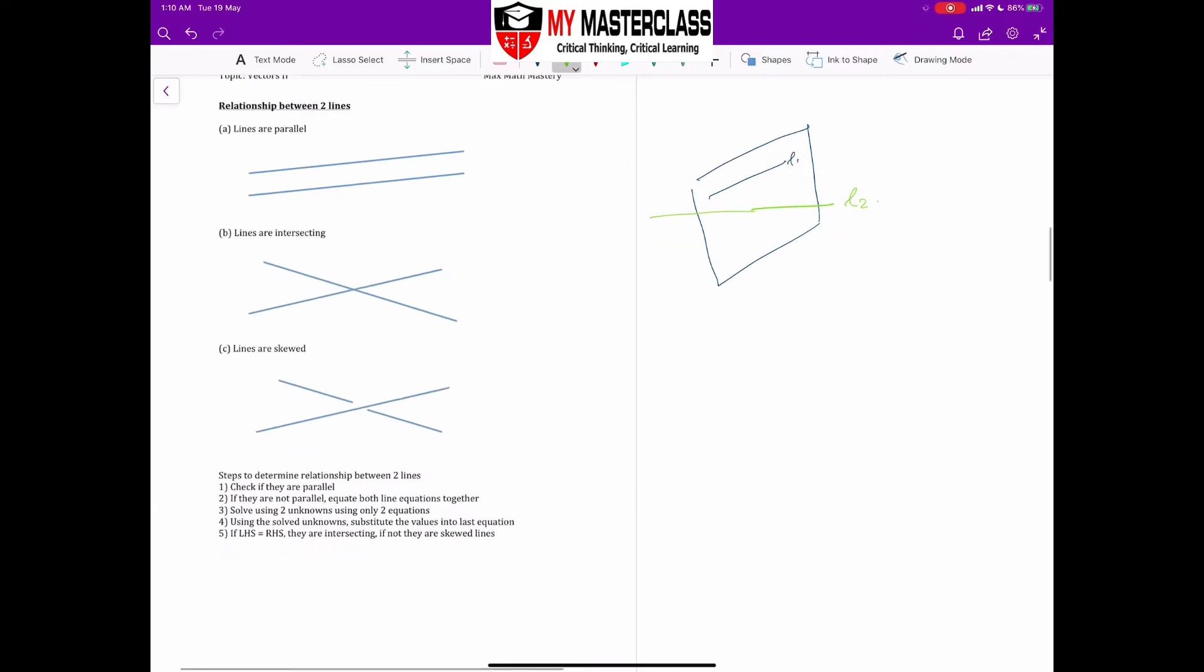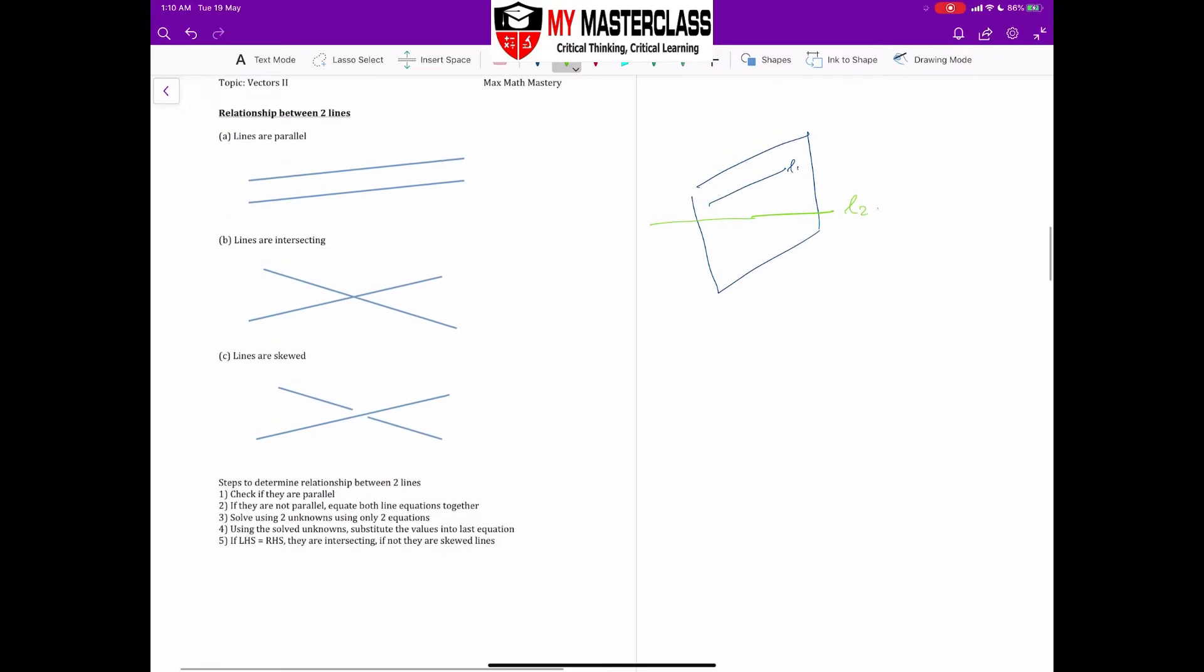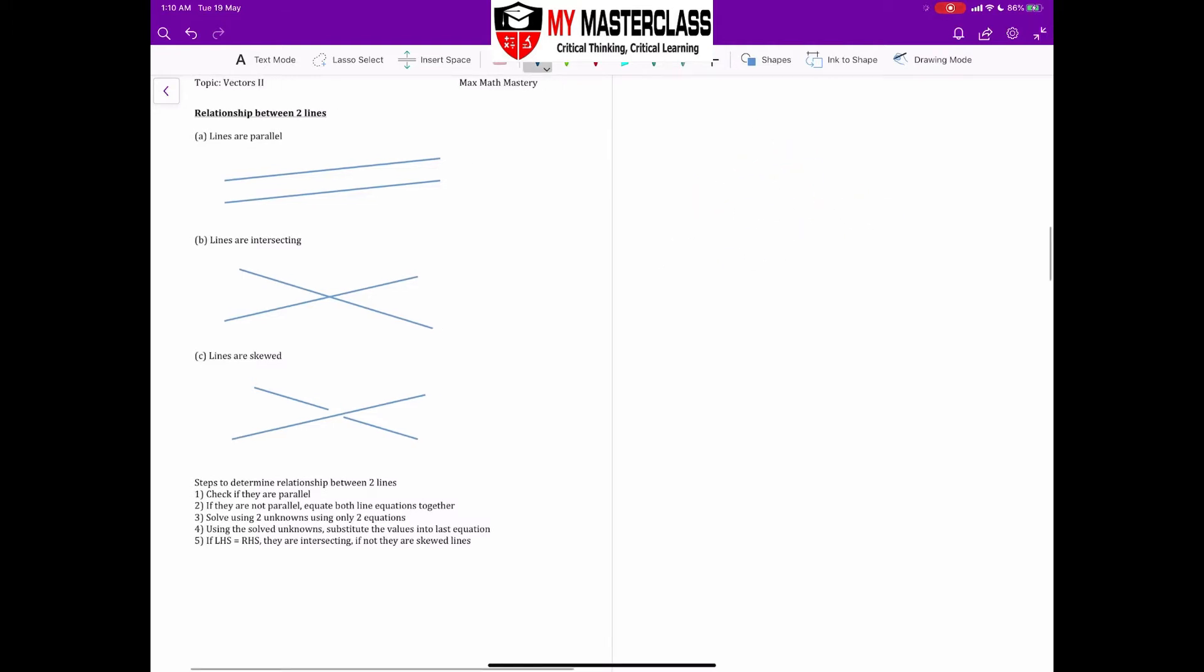So for these three different kinds of relationships, how do I determine what kind of relationship two lines share? For example, I'm going to give you two line equations, and I'm going to determine the relationship between these two lines.